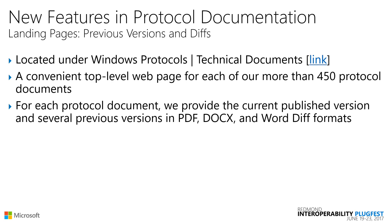Let's take a look at the landing pages for individual Windows Protocol documents — something we started doing a little more than a year ago and have been refining ever since. We'd love feedback on this from you. The first thing I want to talk about is previous versions and diffs. Similar to overview documents, we provide previous versions and diffs for each individual Windows Protocol document as well. We intend these landing pages to be a convenient top-level web page for each one — there are more than 450 of them — something you could bookmark or email to a colleague. For each protocol document we provide the current published version and a number of previous versions in PDF and DOCX, plus Word diffs in PDF.